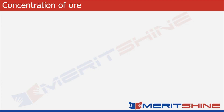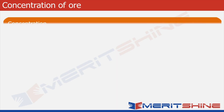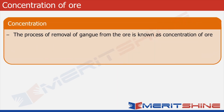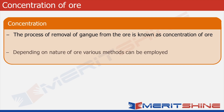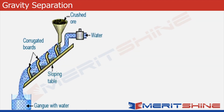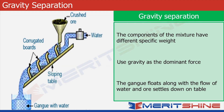The process of removal of gangue from the ore is known as concentration of ore. Concentration of ore can be carried out in several ways depending upon the nature of the ore. The first method is gravity separation — if there is a significant difference between the weights of the ore and gangue, gravity separation can be used, as the heavier one will settle down.